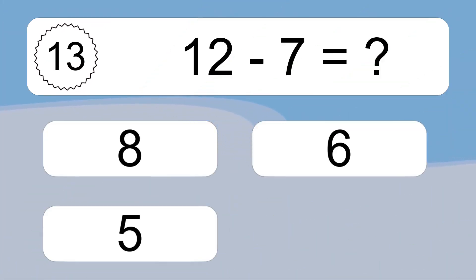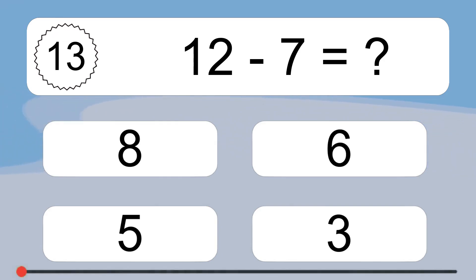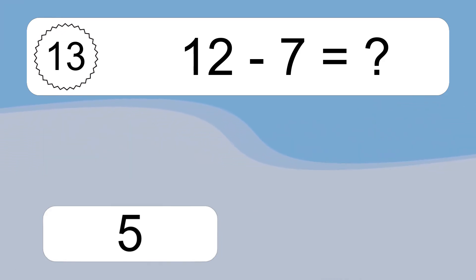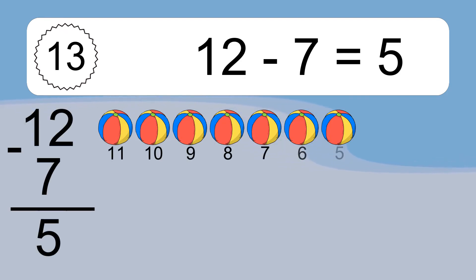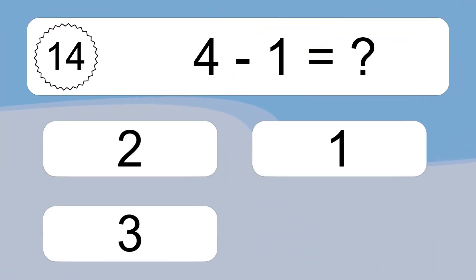12 minus 7 equals what? 12 minus 7 equals 5. Let's count it: 11, 10, 9, 8, 7, 6, 5.